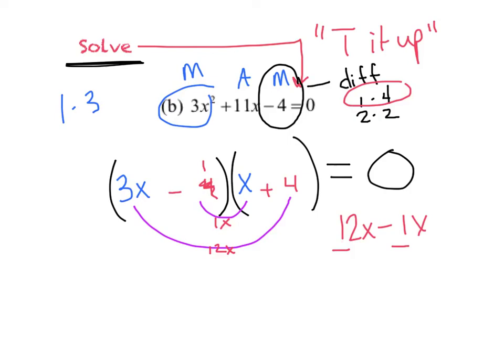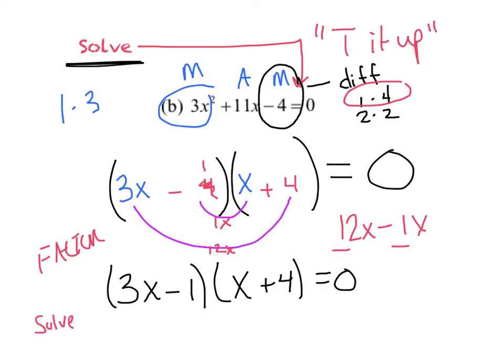Let's just make sure our signs work. I would have to do a 12x minus a 1x. Meaning, I have different signs. And, that's exactly what I wanted. So, I want this 12x to be positive. And, I want this 1x to be negative. Now, because that mine is a little sloppy, I'm going to rewrite it. I have 3x minus 1 times x plus 4 equals 0.